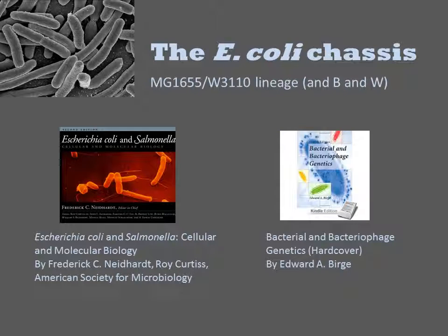The most common laboratory strains in use today are derivatives of an ancestral E. coli isolate named MG1655. The name W3110 refers to an almost identical organism. This strain of E. coli is often referred to as K12, which is its serotype, which we'll come back to later.